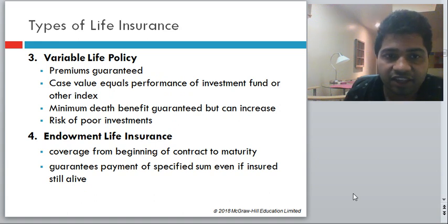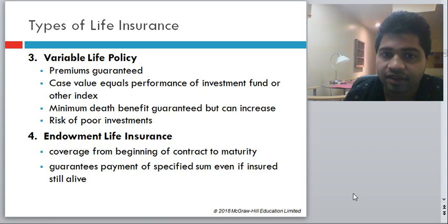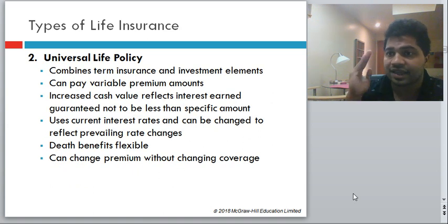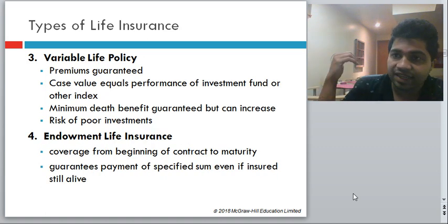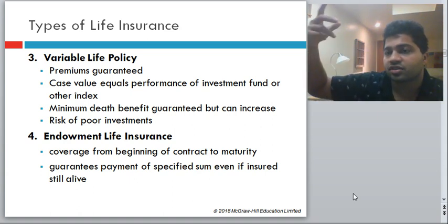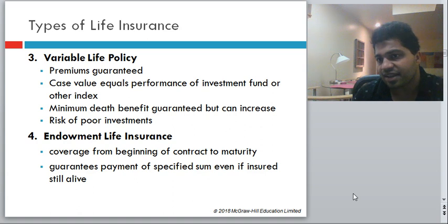The third type is variable life policy. Premiums are guaranteed but cash value equals the performance of investment funds or other indexes. A minimum death benefit is guaranteed but can increase. The risk of poor investment is borne by the policyholder. Rather than making guaranteed investments like in universal life, variable life invests in, say, stock markets or stock indexes. Your returns are based on a particular index — if the index goes up, your policy value goes up; if it goes down, your policy value goes down. Returns are quite variable.